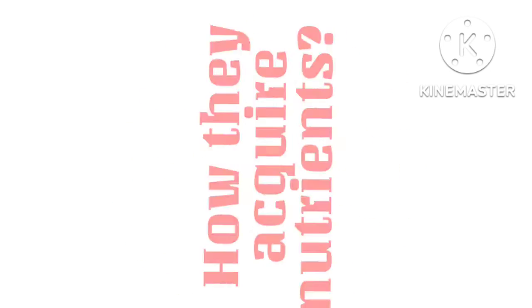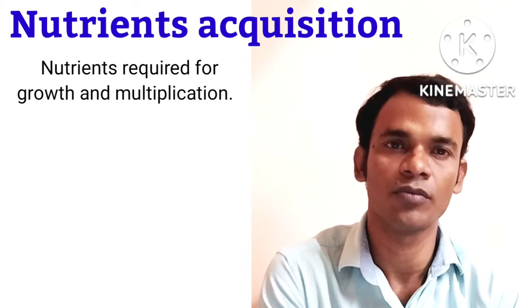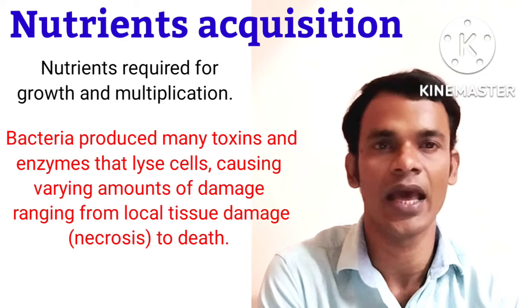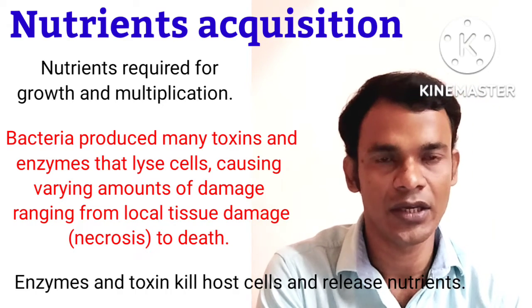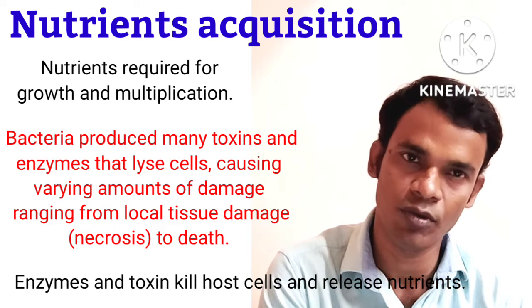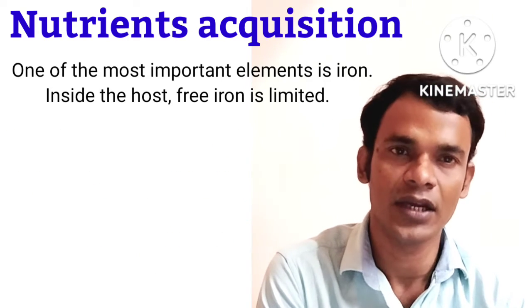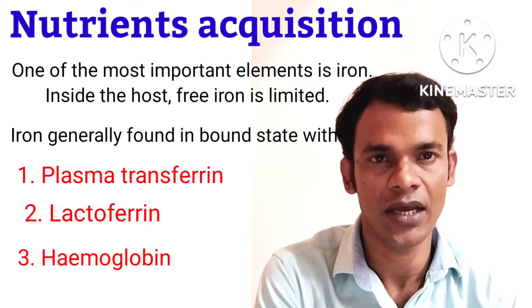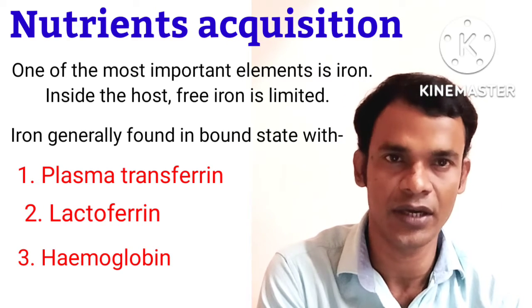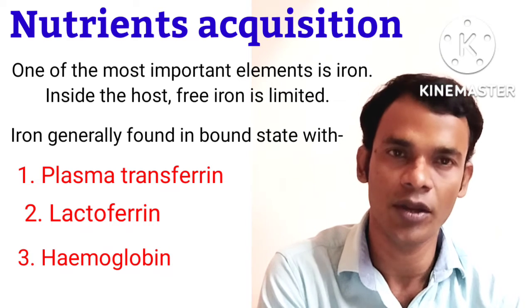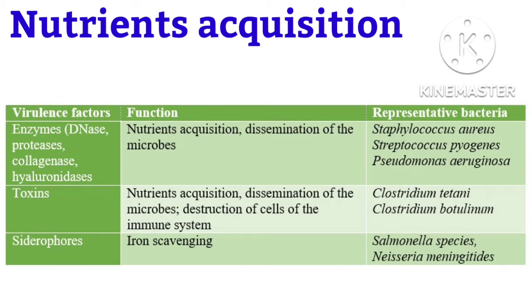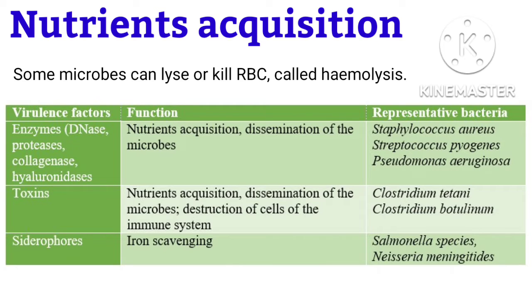In order to reproduce, bacteria must acquire nutrients from the host. Bacteria produce many toxins and enzymes that lyse cells, causing damage ranging from local tissue damage to cell death. Iron is essential for bacterial growth, but inside the body most iron is bound to plasma transferrin, lactoferrin, or hemoglobin. A group of virulence factors called siderophores can remove iron from transferrin and lactoferrin. Some microbes directly lyse red blood cells to release iron — this phenomenon is called hemolysis.